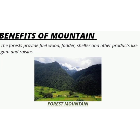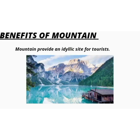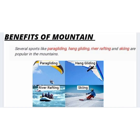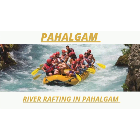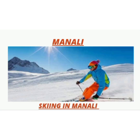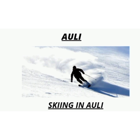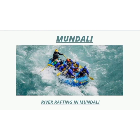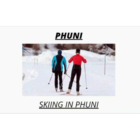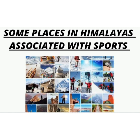The forests provide fuel, wood, fodder, shelter and other products like gums and resins. Mountains provide an idyllic site for tourists. Several sports like paragliding, hang gliding, river rafting and skiing are popular in the mountains. Places like Gulmarg, Pahalgam, Kufri, Manali, Narkanda, Solang Nala, Auli, Munsiari, Mundali, Yamthang, Poongi, and Tawang are all places in the Himalayas associated with these sports.